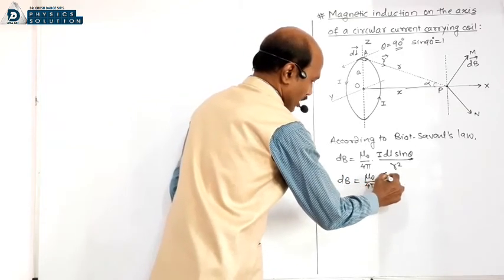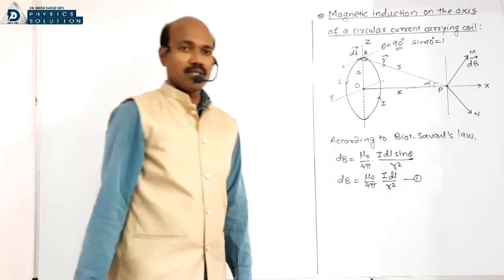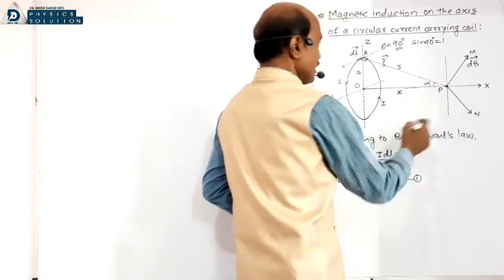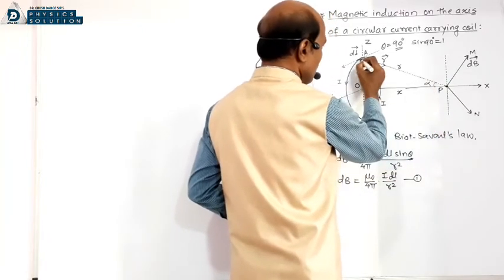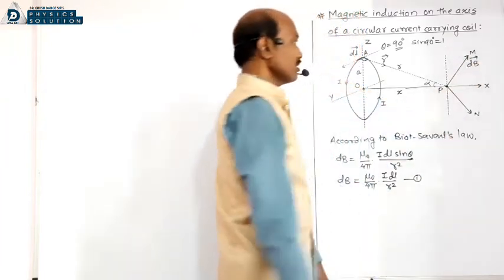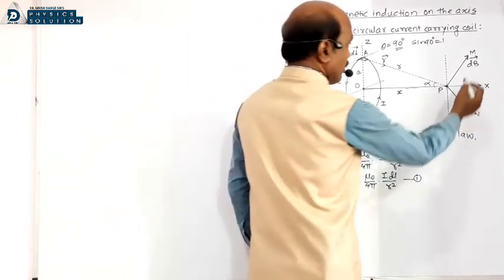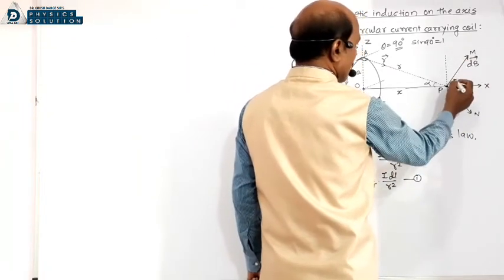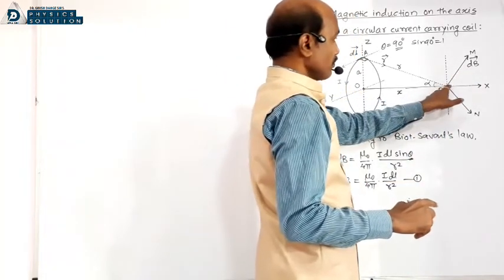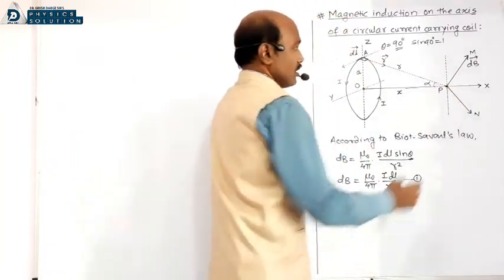Since sin 90° = 1, the equation simplifies to: dB = (μ₀/4π) × (I dL) / r². This is the magnitude of magnetic induction produced at point P due to this small element, and its direction is along PM.